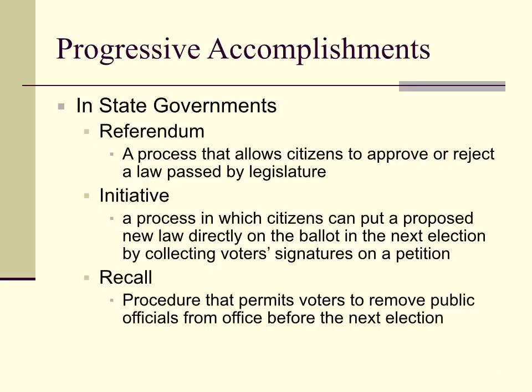In state governments, you have the referendum, which allows citizens to approve or reject a law passed by the legislature. The initiative is when citizens can put a proposed new law directly on the ballot in the next election by getting voters' signatures on a petition — for example, if I want free school lunch for everybody and want it on the 2015 ballot, I can get it placed directly on the ballot if I gather enough signatures.